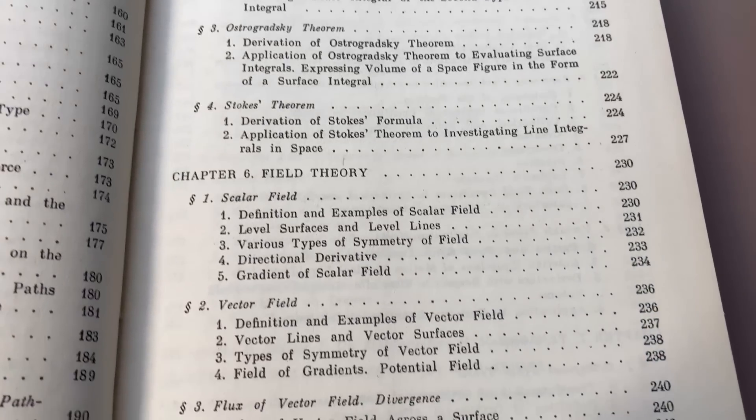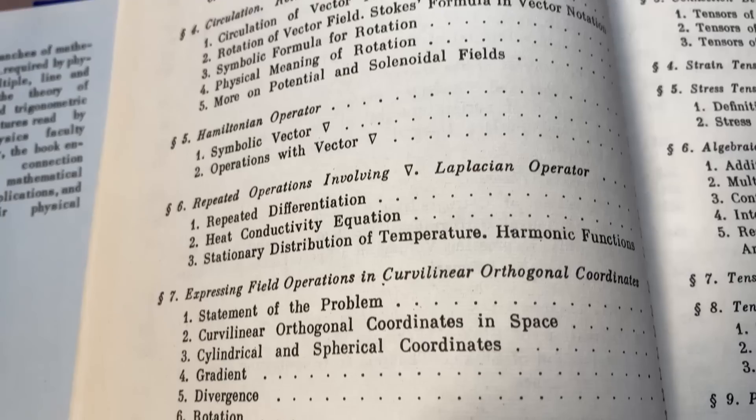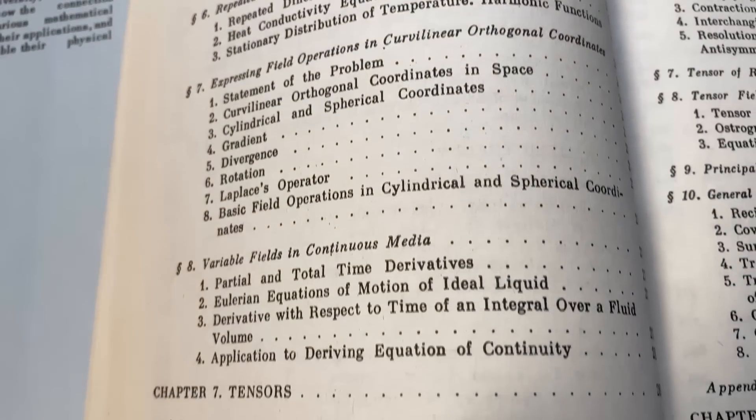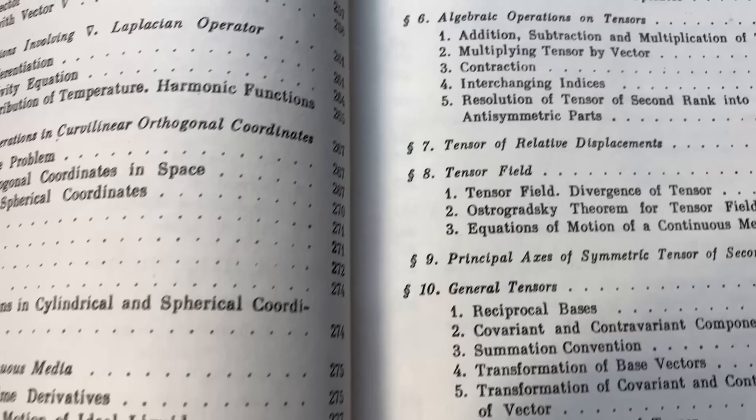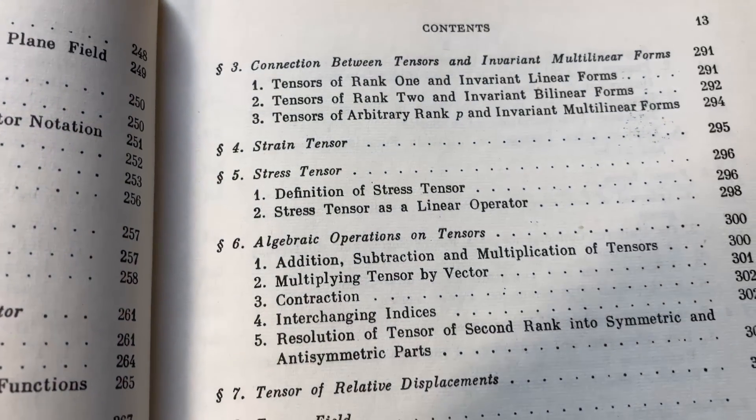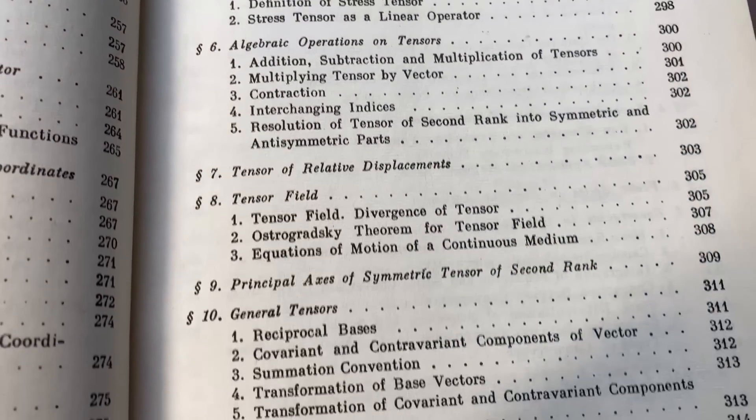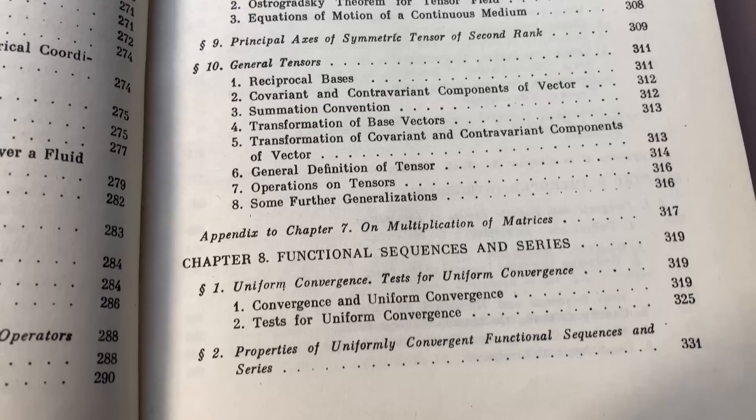Then field theory. Really cool. And it just keeps going. There is so much mathematics in this book. Chapter 7 is on tensors. Let's keep looking here at some of these other topics. And we'll look at some of the math in this book in a minute once we get through this intense table of contents.